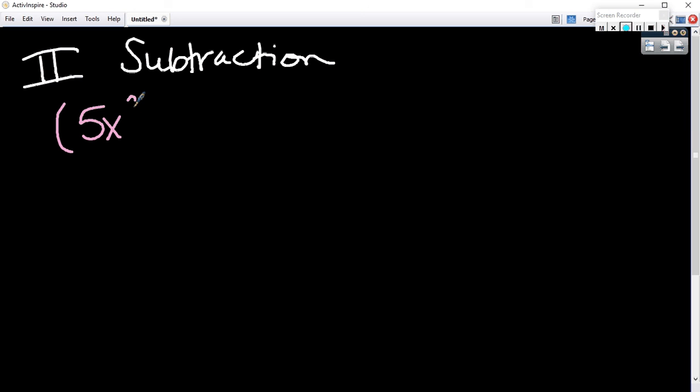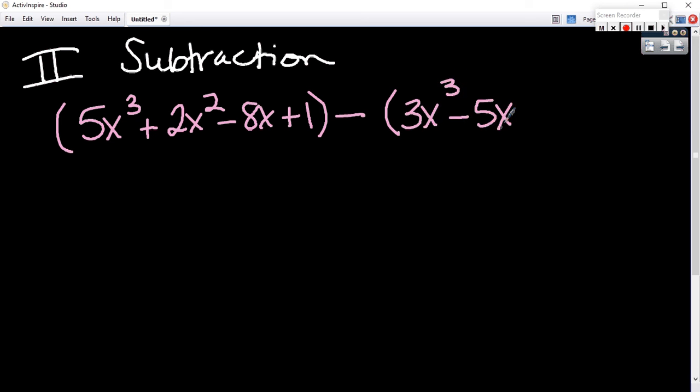If I have 5x cubed minus 5x squared plus 7x minus 3... we did it with complex numbers. I think we talked about this whenever we were subtracting. Now, what you have to understand is that I'm taking this polynomial and I'm subtracting everything here. I'm subtracting that entire second polynomial.